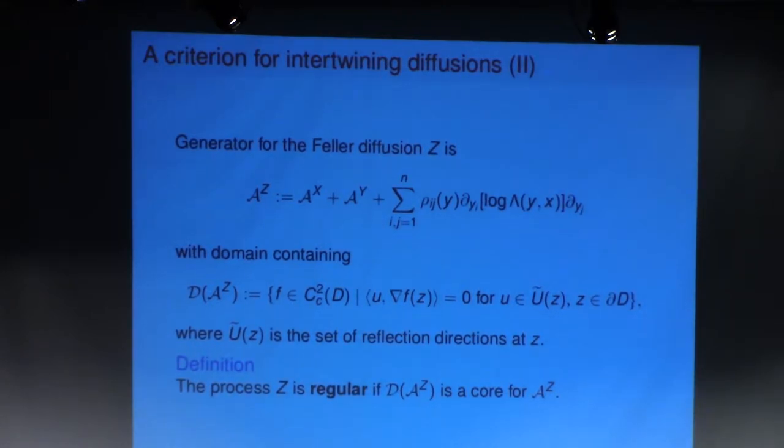Okay, and I'm going to want a special property on this process as a diffusion. What I'm going to want is that, well, first of all, its domain always contains these functions. So these are compactly supported functions which obey a certain Neumann condition. And the property I want is that I'll call a diffusion Z regular if this domain is actually a core for its generator.